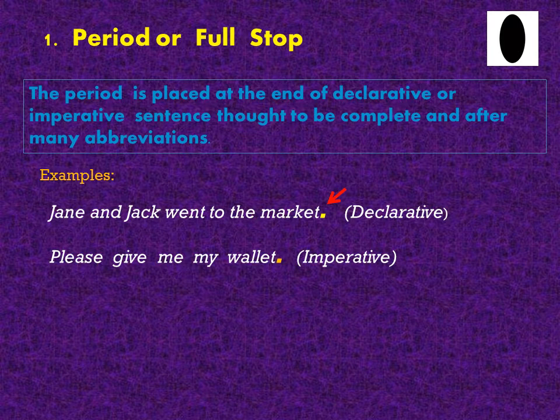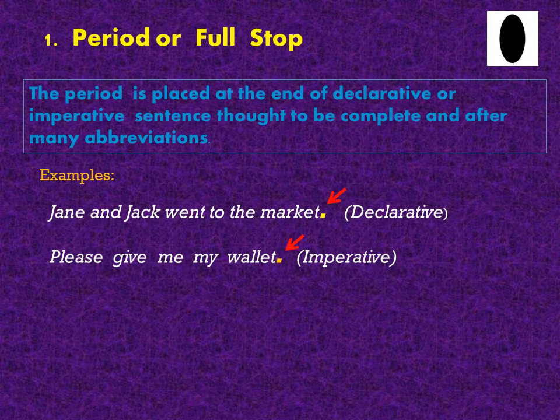Please give me my wallet. This is a kind of imperative sentence which is asking, requesting, or commanding. Take a look at where we are going to place the period or full stop. This is also a complete sentence. That's why we are going to place the period at the end.